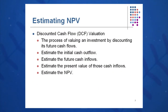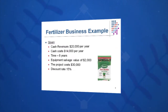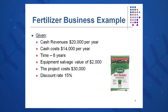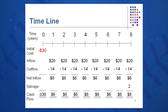Let's go into the fertilizer business as another example. In this case: twenty thousand dollars a year in sales, fourteen thousand dollars a year in costs, eight-year project, salvage value of two thousand dollars, project cost of thirty thousand dollars today, with a discount rate of fifteen percent. We do a timeline — in sessions six through eleven, you want to draw timelines because they help you analyze discounted cash flow analyses.